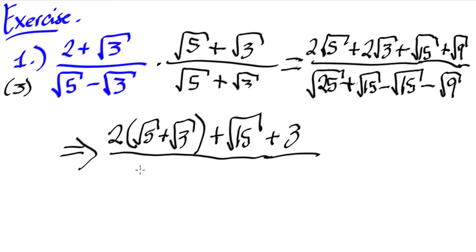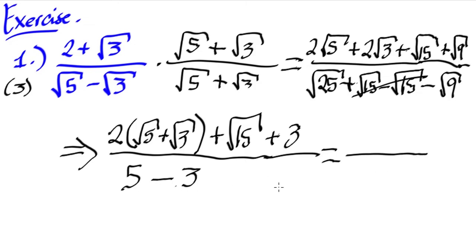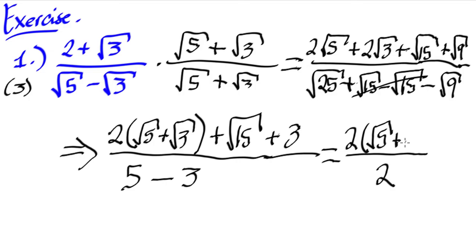For the denominator, square root of 25 is five. Positive square root of 15 minus square root of 15 becomes zero. Then we have minus three. So the denominator simplifies to five minus three, which is two. Therefore, the fraction becomes two times the quantity of square root of five plus square root of three, all over two.